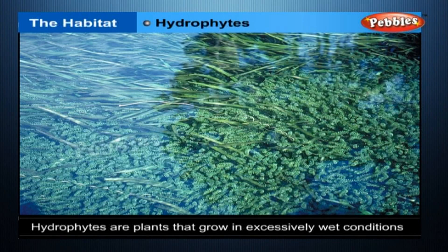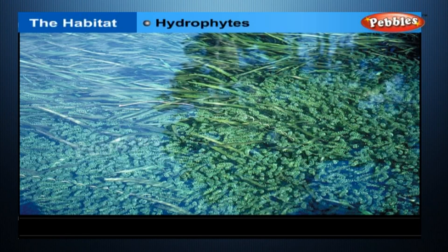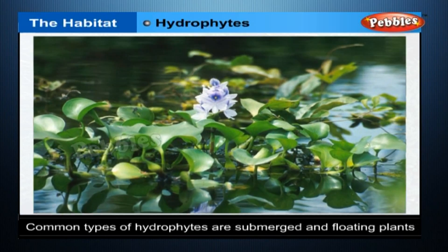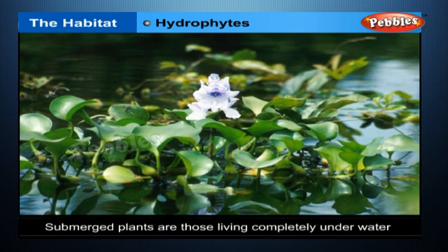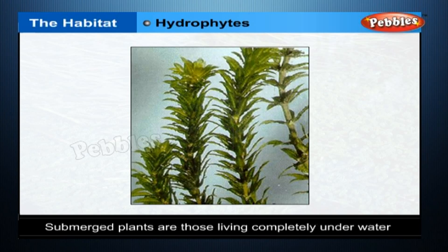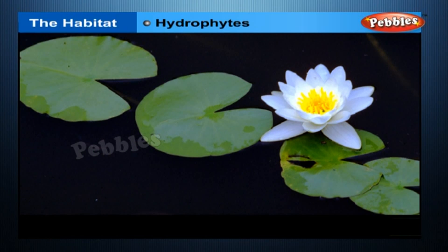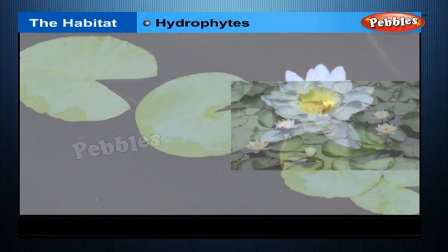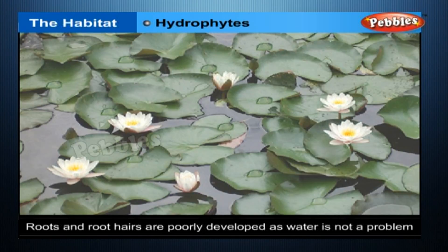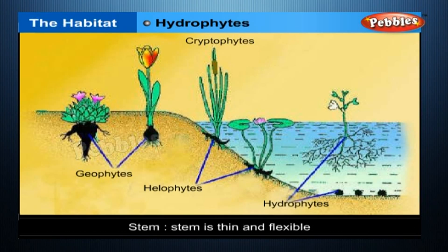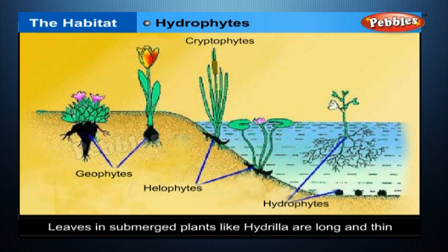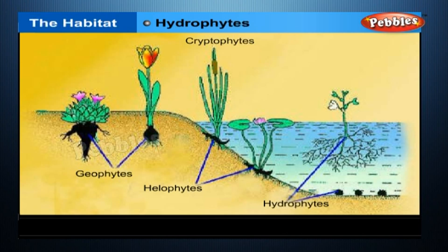Hydrophytes, meaning water plants, are plants that grow in excessively wet conditions or completely in water. Two common types are submerged plants — those living completely underwater, like hydrilla and valisneria — and floating plants — those living or floating on the surface of water or slightly below it, like water hyacinth, iconia, water lily, and lotus. These plants show adaptations in their roots, stems, and leaves. Roots and root hairs are poorly developed as water is not a problem. The stem is thin and flexible so that it can sway or bend with water movement and pressure. In submerged plants like hydrilla, leaves are long and thin so that strong water currents are not able to tear them apart.